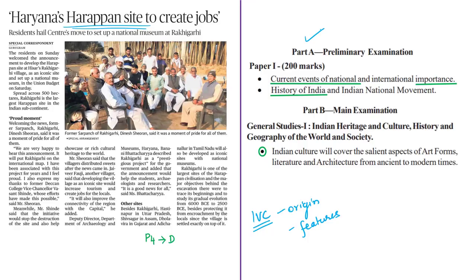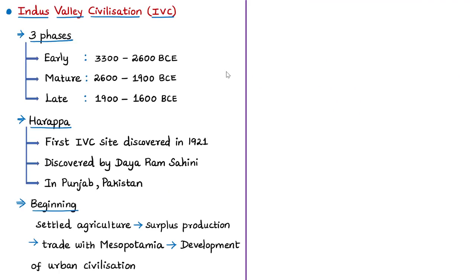The Indus Valley Civilization got its name from the River Indus, as it flourished near the valleys of that river. In the present world, this civilization is spread across India and Pakistan. The time period is disputed, but historians generally classify it into three phases: the early phase from 3300 to 2600 BCE, the mature phase from 2600 to 1900 BCE, and the late phase from 1900 to 1300 BCE.